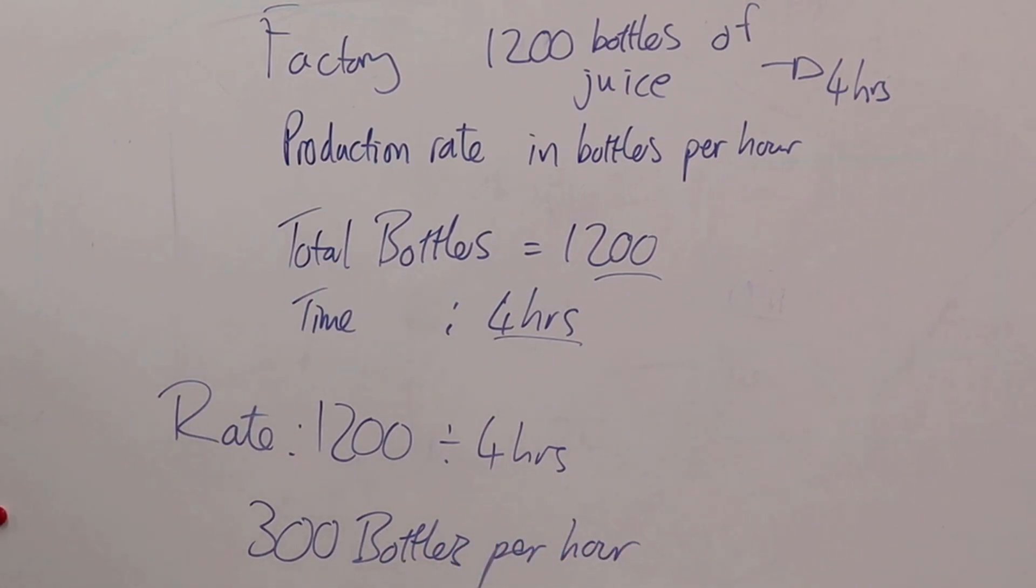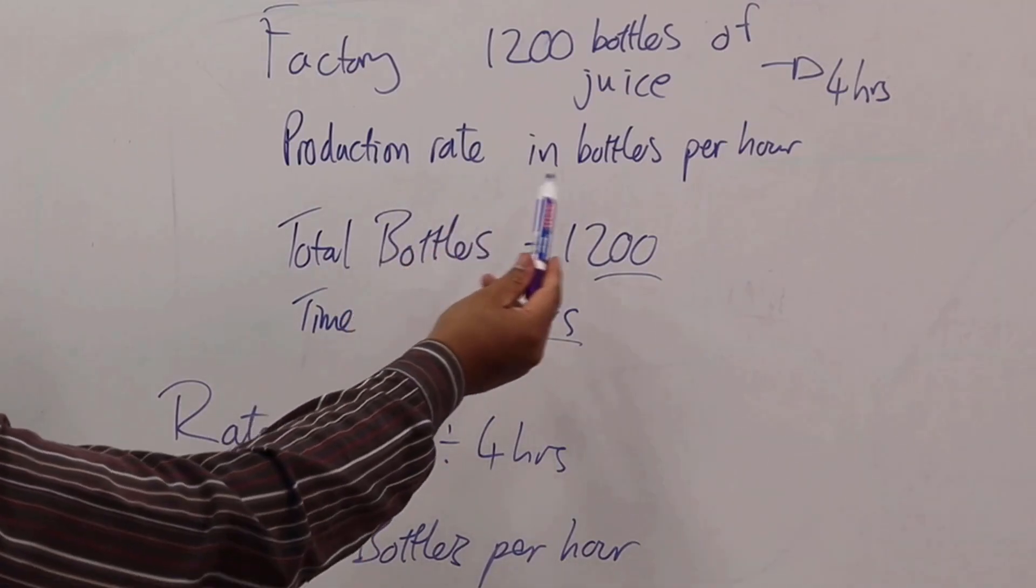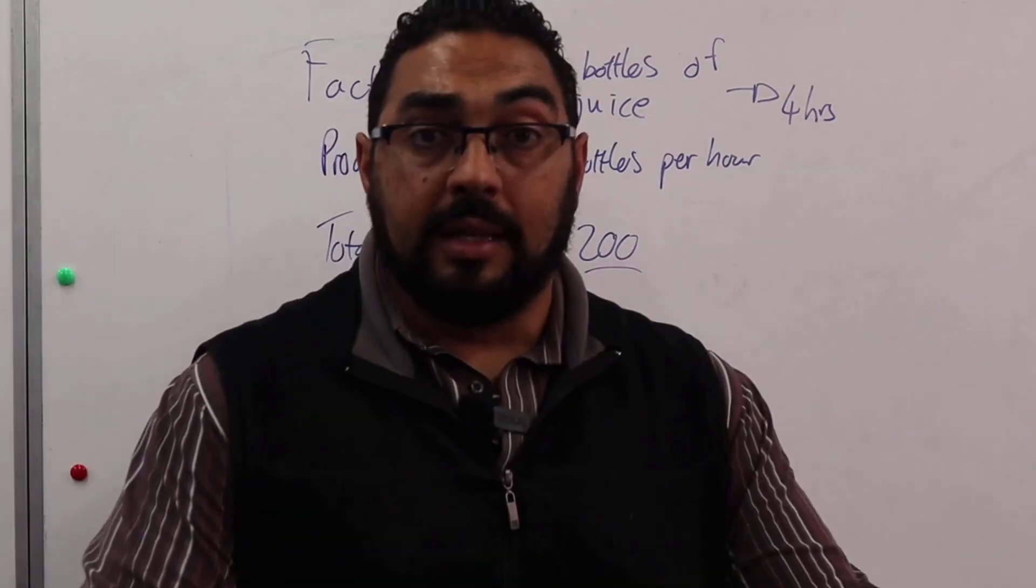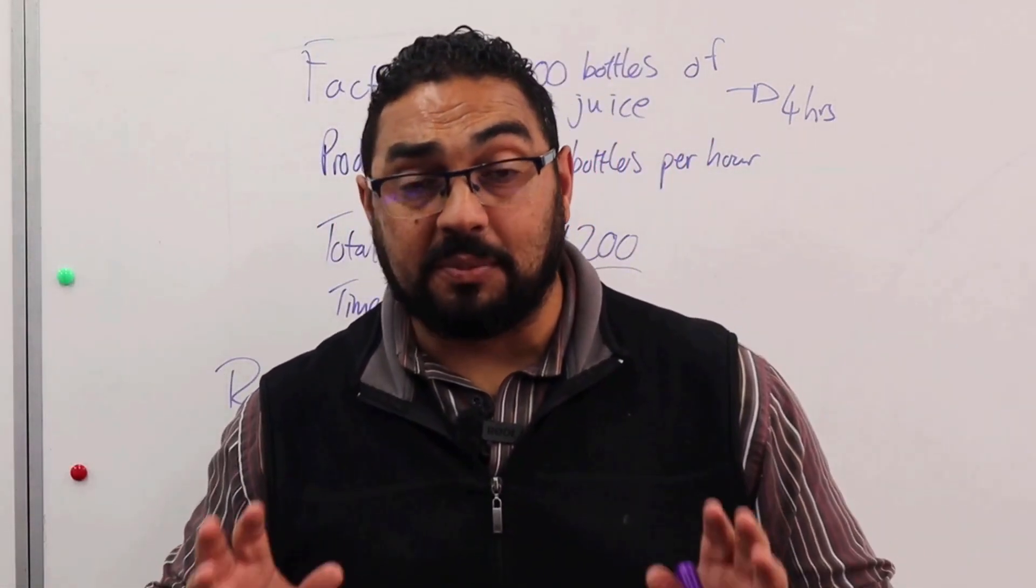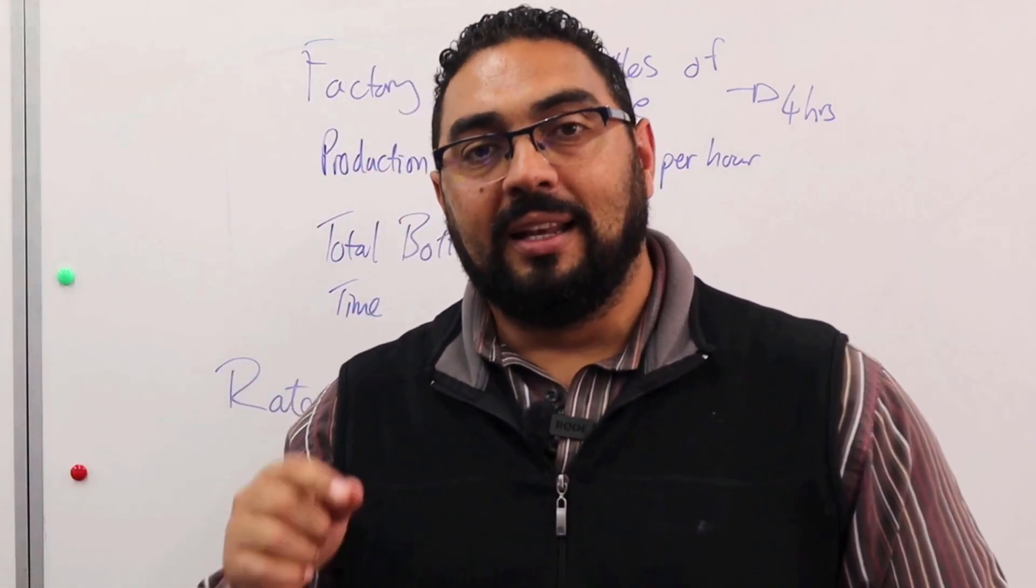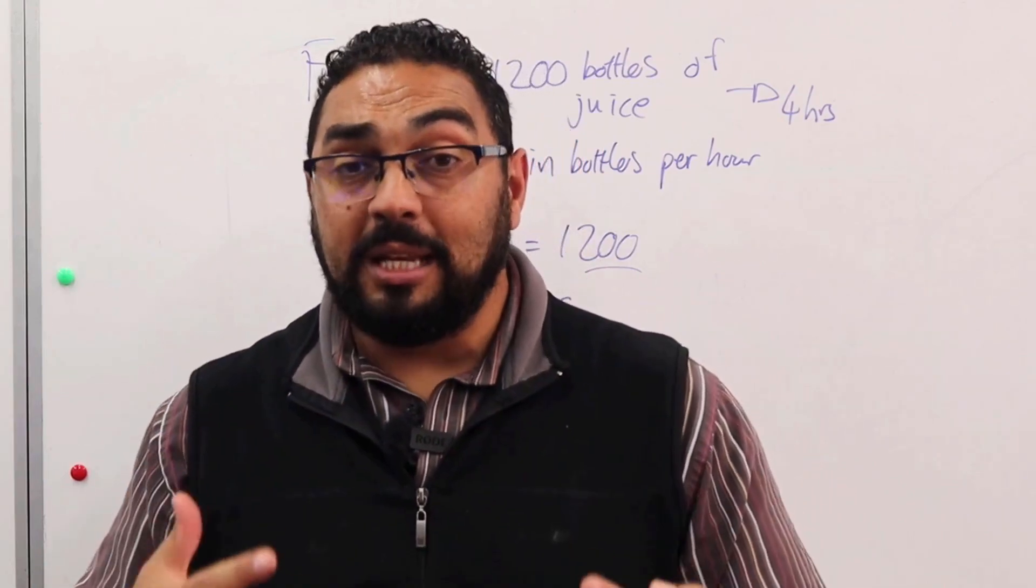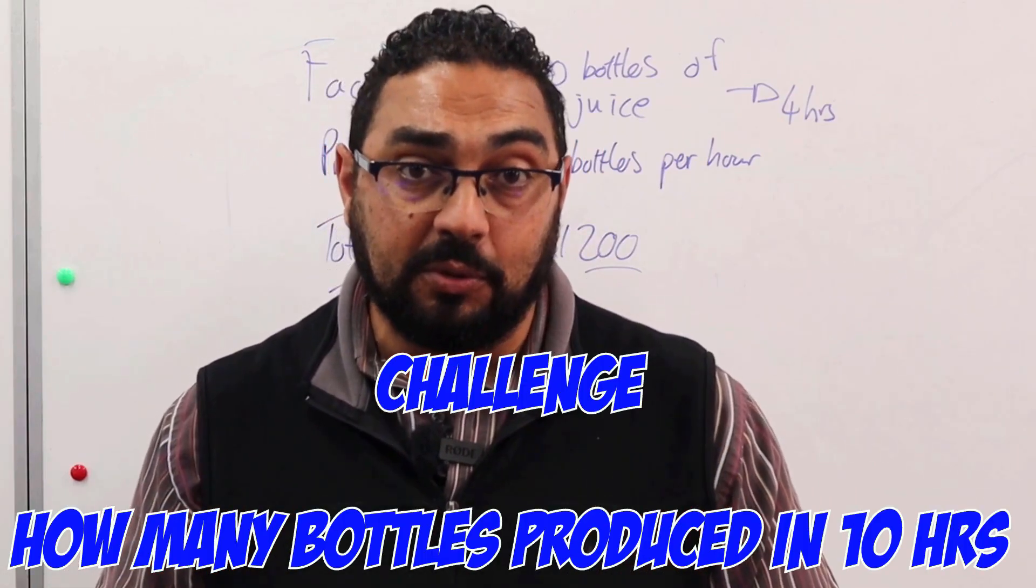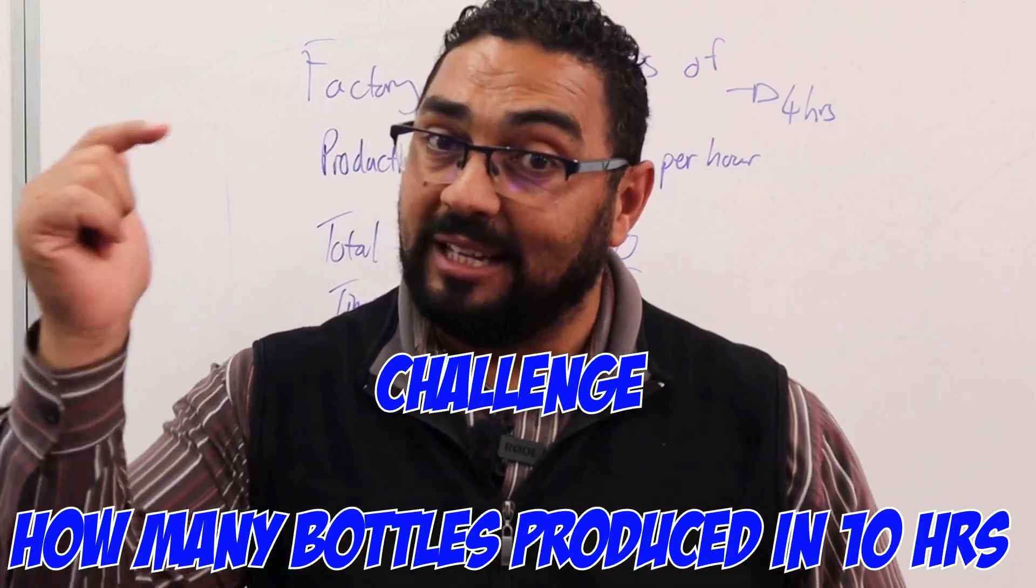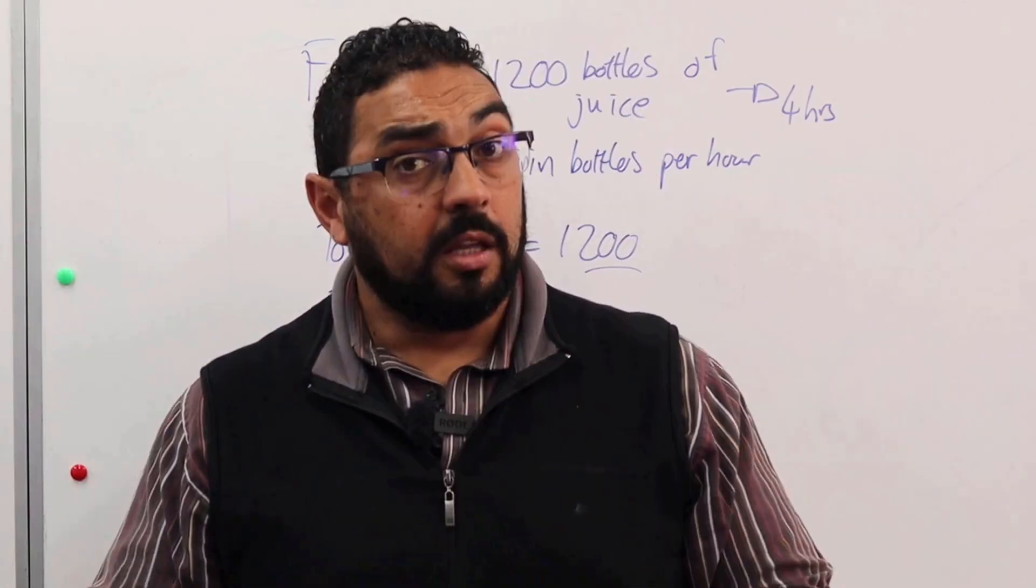per hour. So there we have our answer. We were asked what's the production rate in bottles per hour. It is 300 bottles per hour. Now that we know that it's 300 bottles per hour, what if they speed this up? So I want to challenge you in the comments below. Let me know how many bottles they are actually going to produce in a period of 10 hours. Let me know in the comments below. So remember, the rate